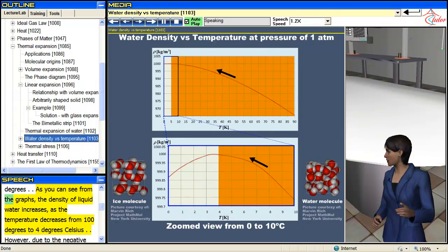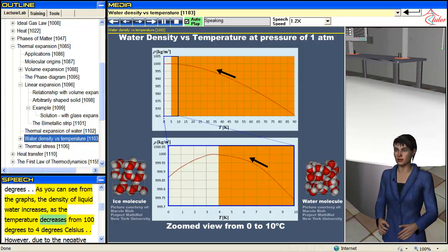As you can see from the graphs, the density of liquid water increases as the temperature decreases from 100 degrees to 4 degrees Celsius.